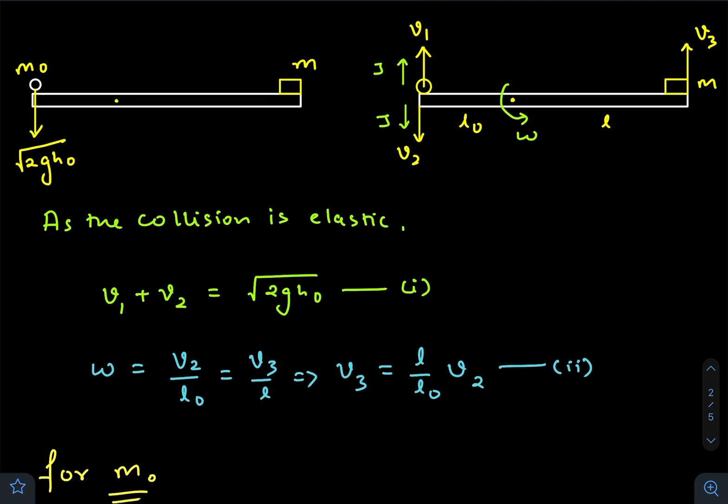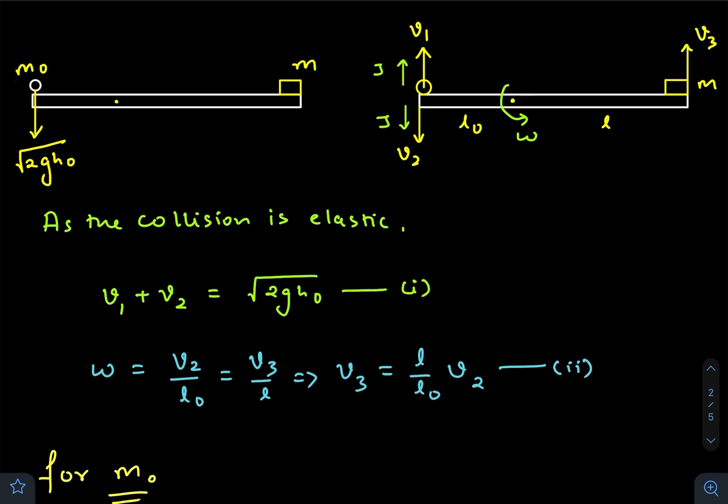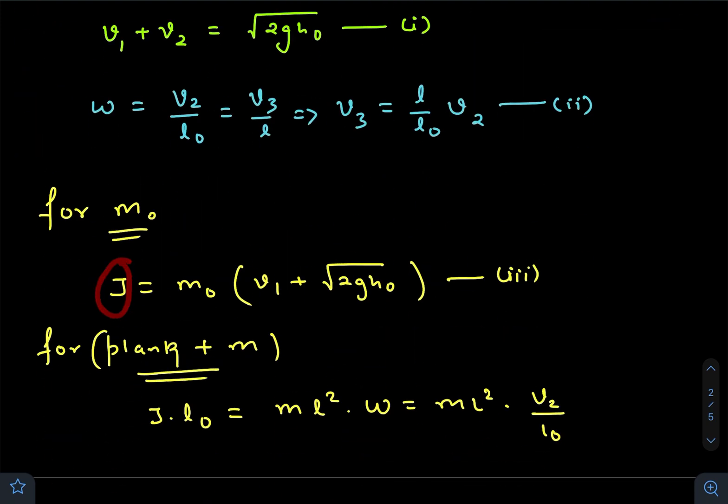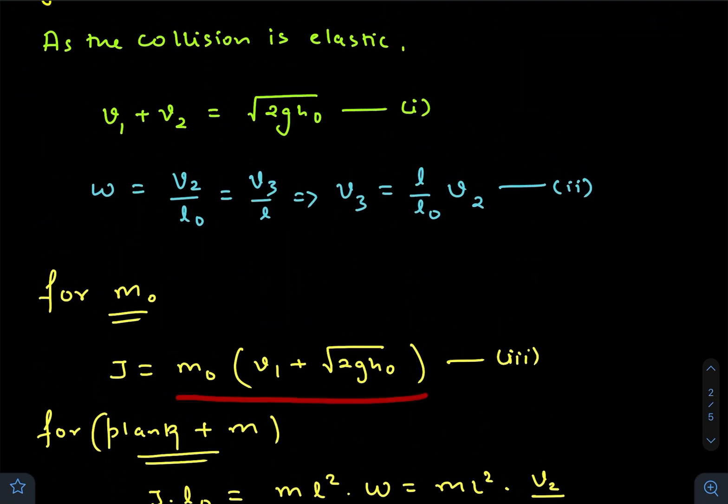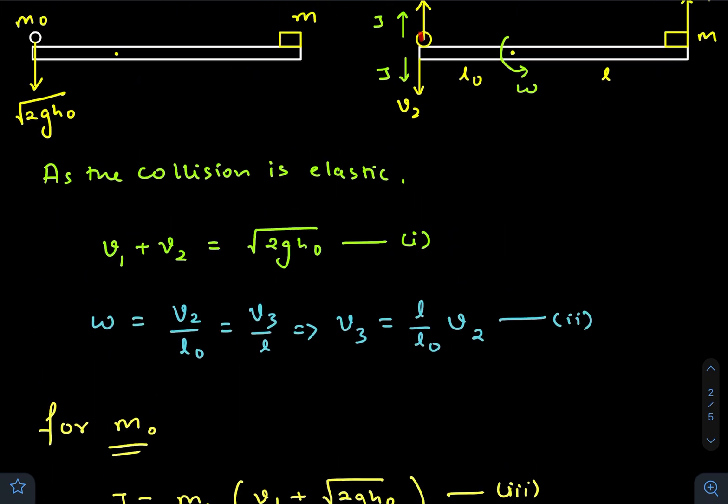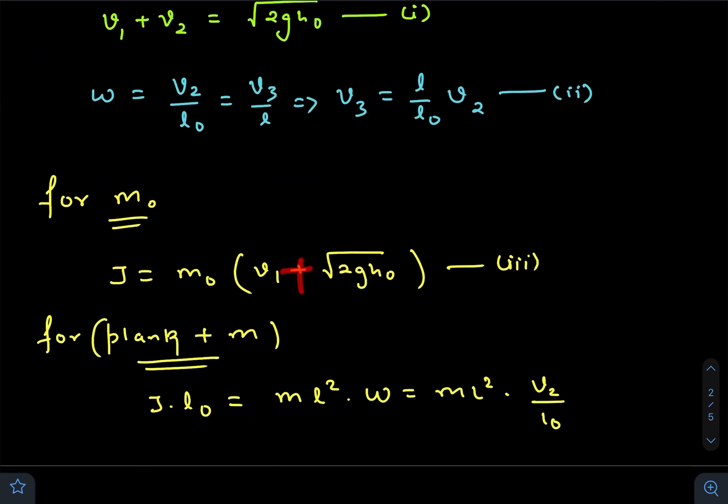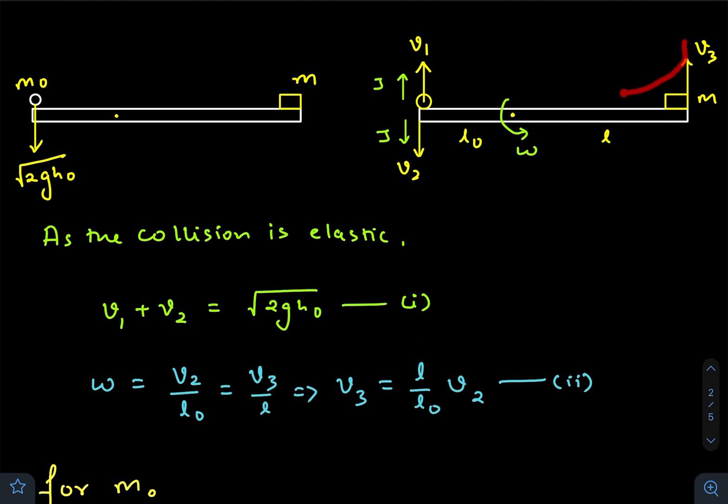Now for this mass, there is an impulsive force that acts on it in the upward direction. Due to that impulse, there will be a change in linear momentum. The final momentum in the upward direction is v₁ - (-√(2gh₀)), so there will be a plus symbol here. For the plank and this mass combined,